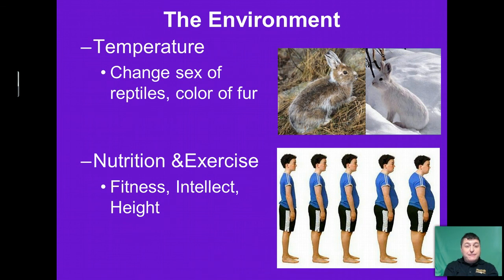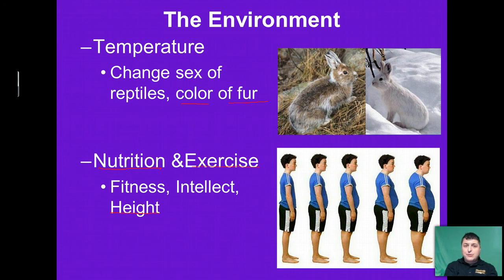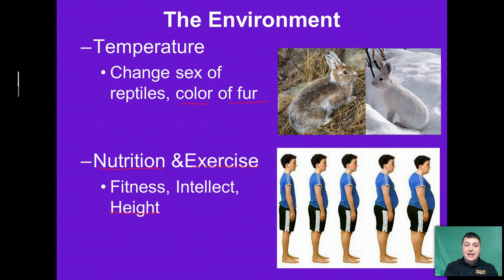The environment can still influence us even after we're born. Temperature can change the sex of reptiles and the color of the fur of certain mammals. Depending upon what we eat or how we exercise, it changes our fitness levels, can influence our intellect, and can determine the maximum height we can achieve. For example, if you had two twins — one receiving a highly nutritious diet and exercising regularly, the other with a less nutritious and less active lifestyle — over time we would see that the one receiving better nutrition and activity would have grown taller and perhaps achieved higher things intellectually than their twin.